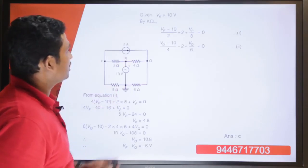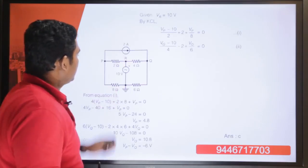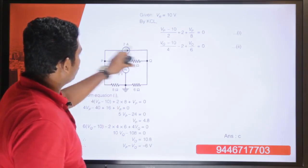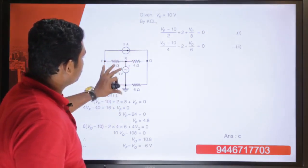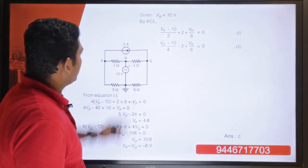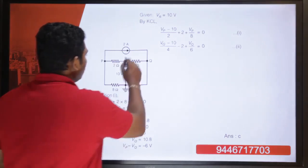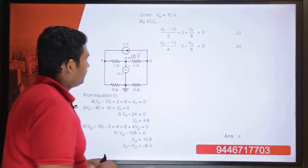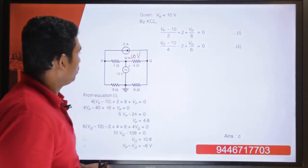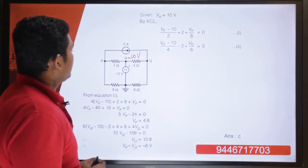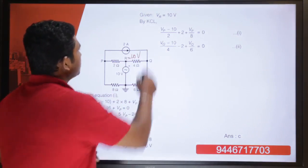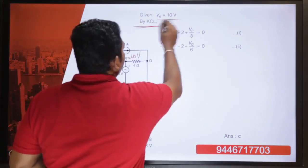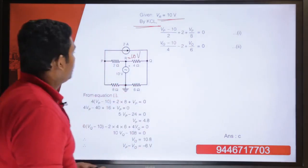This is the figure that is given. There is a 10 volt voltage source and a 2 ampere source. We are taking point R to have a value of 10 volt and we are going to make Kirchhoff's current law equations by considering Vr equal to 10 volt.